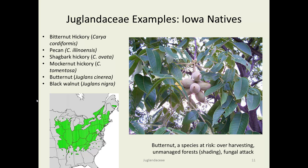Iowa natives include shagbark hickory and black walnut, but also butternut, Juglans cinerea — in the same genus as black walnut — and a couple other hickories: Carya tomentosa, Carya illinoinensis (pecan, native to eastern Iowa), and bitternut hickory, Carya cordiformis. Butternut has become fairly rare across its original distribution, partly because of harvesting, partly because of pathogens including a fungus, and partly because it doesn't tolerate shade — if overtopped by other trees in an unmanaged woodland setting, they die.